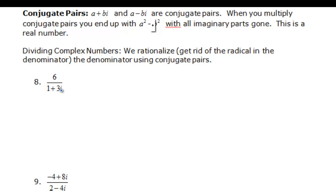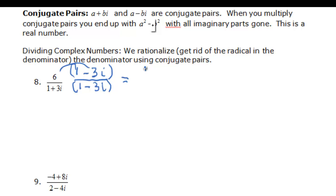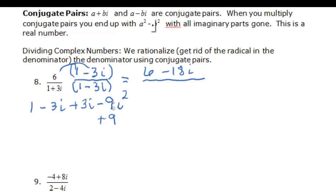What's the conjugate pair to 1 plus 3i? That's going to be 1 minus 3i. Since we have an i, we're really rationalizing. You multiply the top and bottom by the conjugate. Distributing the 6 gives us 6 minus 18i on top. On the bottom, 1 times 1 is 1, the middle terms minus 3i and plus 3i cancel, and negative 9i squared is really plus 9. So the denominator is 1 plus 9, or 10.